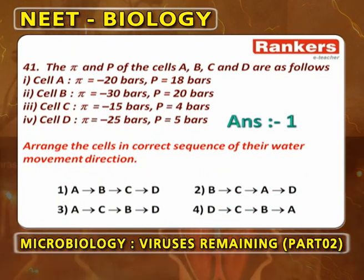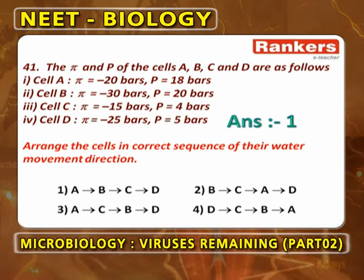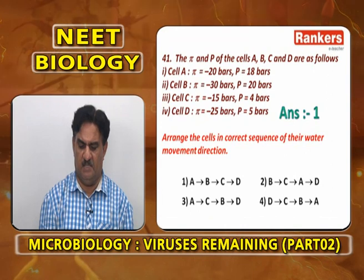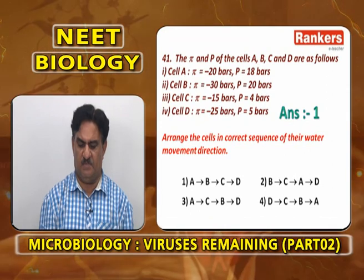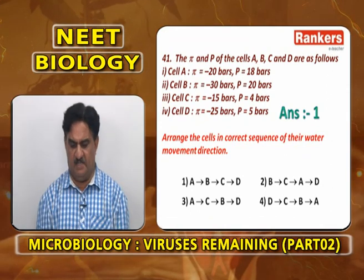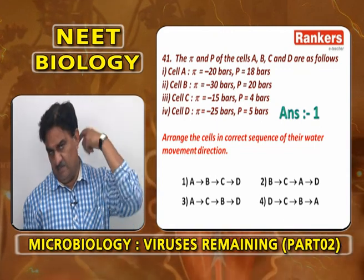The psi (ψ) and P of cells A, B, C, D are as follows: Cell A — pi is −20 bars, P is 18 bars. Cell B — pi is −30 bars, P is 20 bars. Cell C — minus 15 bars, P is 4 bars. Cell D — minus 25 bars, P is 5 bars. The cells in the correct sequence of their water movement from lower to higher water potential.